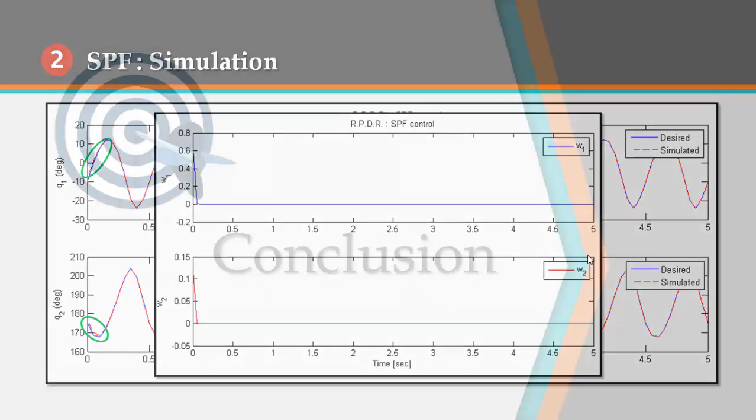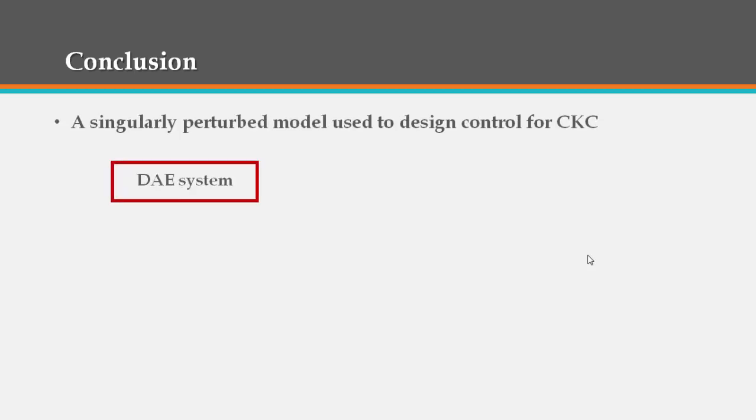In this presentation, a singularly perturbed model has been used for control design for closed kinematic chains. And the control of the original differential algebraic equation system was transferred to the control of an artificially generated singularly perturbed system, and the dynamics of which converge to those of the original system when the perturbation parameter tends to 0.